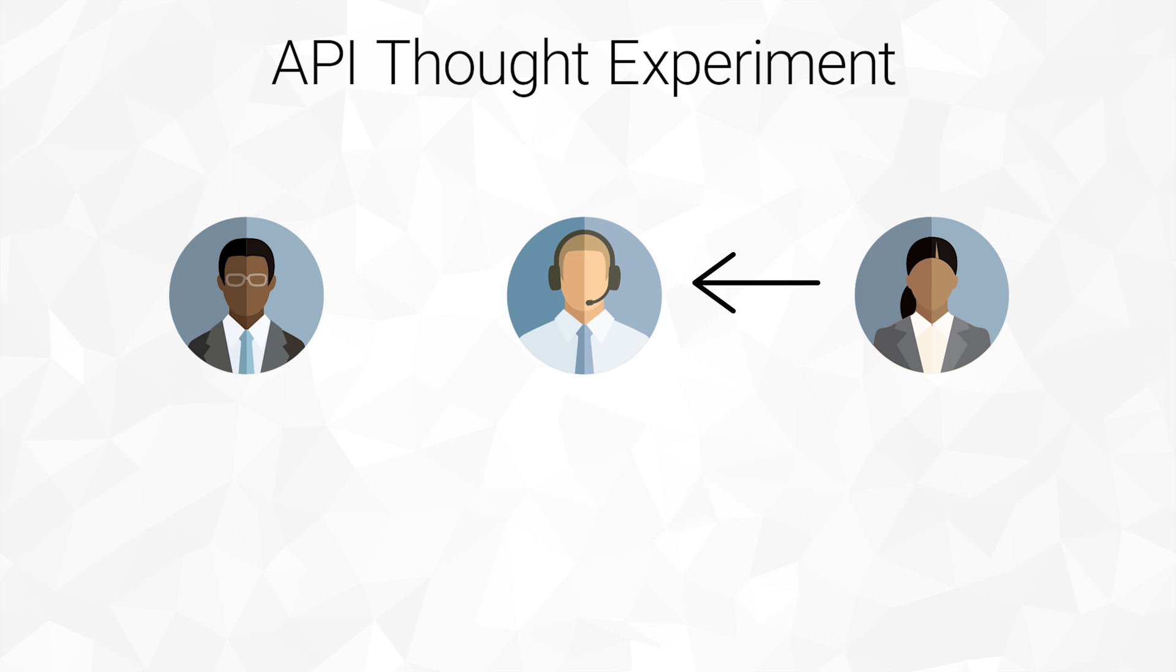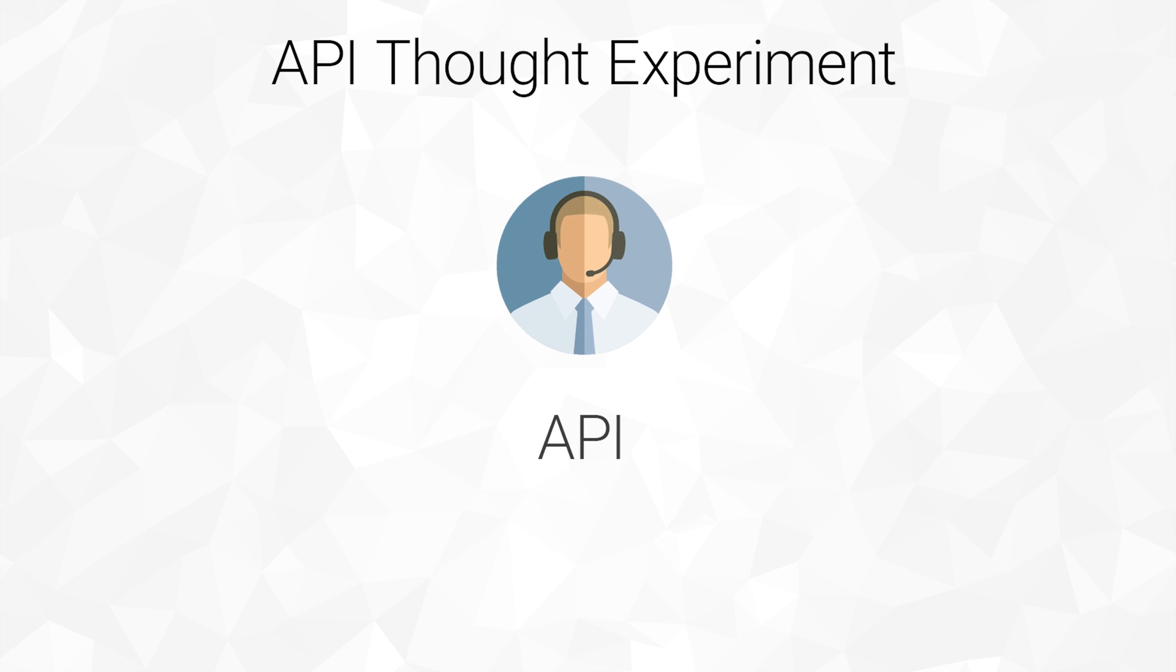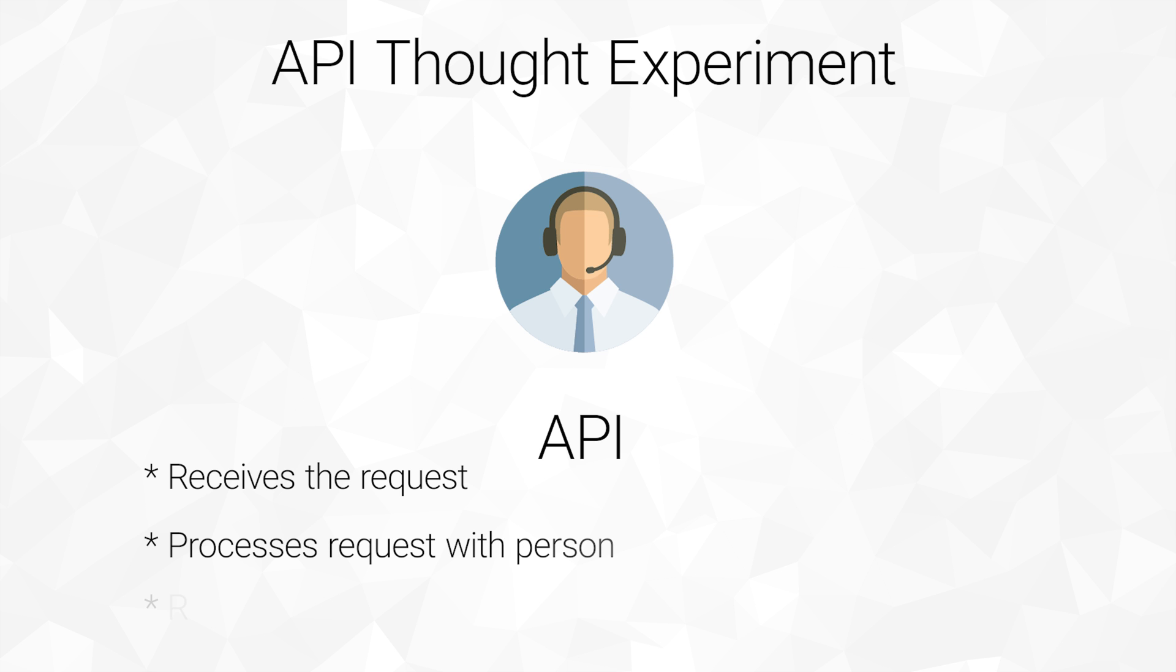The receptionist then calls this person and communicates that you wish to speak with them. They tell the receptionist that they'll be out soon. The receptionist returns and tells you that the person will be out soon. The receptionist, or API in this case, receives the request, processes the information with the person you're looking for, retrieves the response, and delivers it back to you.